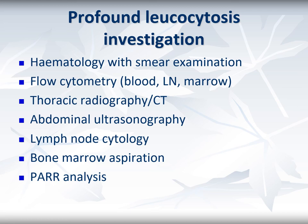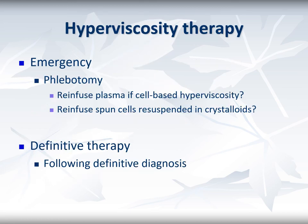For lymphoid malignancies a clonality analysis is the ideal way to confirm clonality if necessary. With regard to therapy, the emergency solution is to sample the blood and ideally return the non-problematic fraction to the patient if local facilities allow, though this is not essential for initial success. This risks anaemia in cases of protein-based hyperviscosity, or hypoalbuminaemia in cell-based types. Therefore, in the medium to longer term, rather than chronic repeat phlebotomy, a definitive diagnosis should lead to definitive treatment and better control.